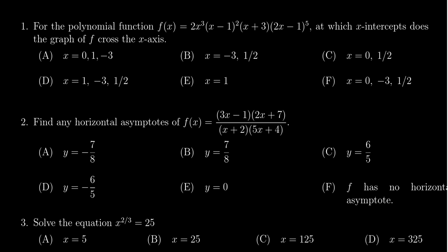We're given a polynomial f of x, which is factored as 2x cubed times x minus 1 squared times x plus 3 times 2x minus 1 to the fifth power. We're supposed to identify which x-intercepts cross the graph of f at the x-axis.